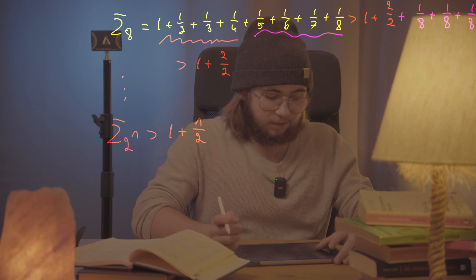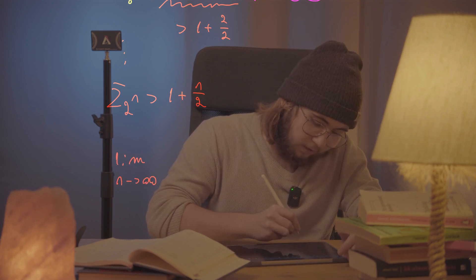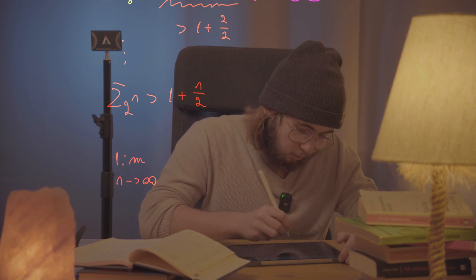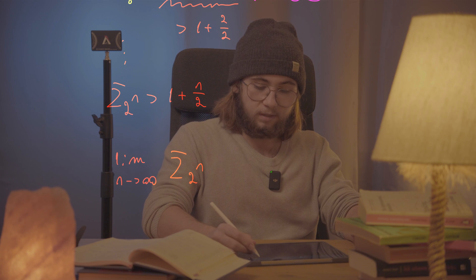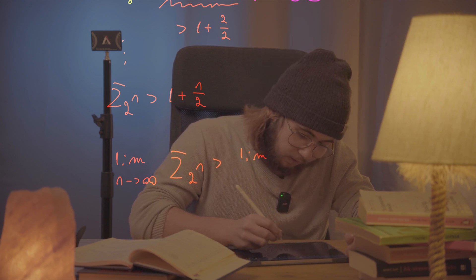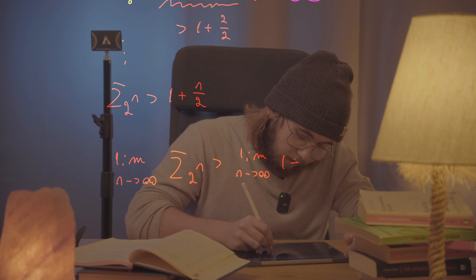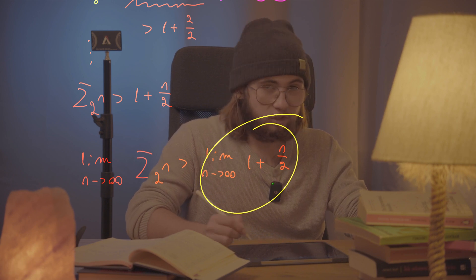If I were to take the limit as n approaches infinity of both sides of this inequality, so first of all of my partial sum of the first 2 to the power of n terms, which actually will give me the sum over all of the terms, because 2 to the power of infinity is just going to be infinity - I'm just going to be summing up all of the possible terms there - this partial sum is going to be greater than the limit as n approaches infinity of 1 plus n over 2.